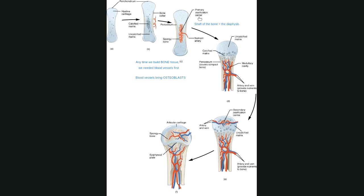The process of endochondral ossification — turning cartilage into bone — is going to continue all through the diaphysis until the middle inside of the cartilage model is turned entirely into bone. But we still have the ends where we still have cartilage tissue.